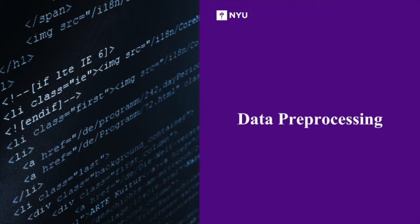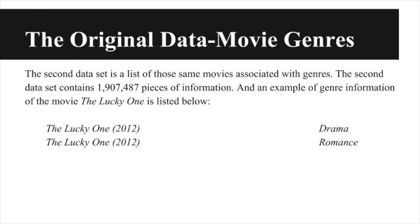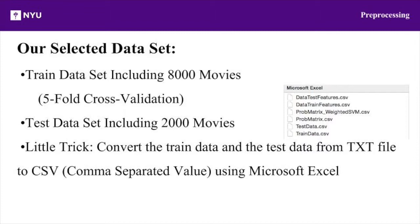Before we can do any machine learning on our data, we have to do a whole lot of preprocessing, which is why the first step of our project is preprocessing, mostly done in Python and Java. We started with a dataset of movies and their synopses, which was a whopping 3.2 million lines long. We also had a dataset of movies and associated genres, which was an impressive 1.9 million lines long. Eventually, we managed to iterate through these lists and whittle them down to a random 10,000 movies with synopses and genres. These selected movies were arranged into a CSV file to help keep them organized and make them easily iterable in Python and RStudio.